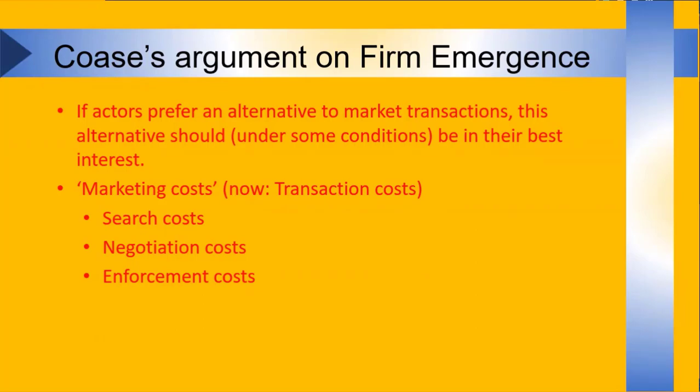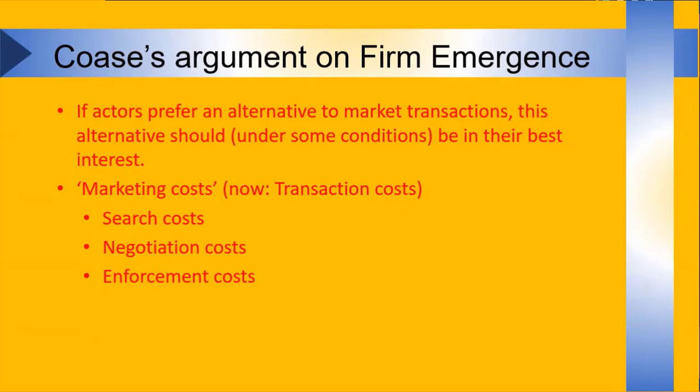So why is there a firm in the first place? Since the market is not free, if you need to organize something through the market you need to search a relevant party to trade with and negotiate with that party and enforce the agreement that you made. That costs you money in the form of time perhaps or things that you need to buy, and that may actually be so high, the marketing cost, that the transaction cost in the firm would be lower. And in that instance actors prefer to set up an organization to transact. That's old news for you. We've discussed that before.